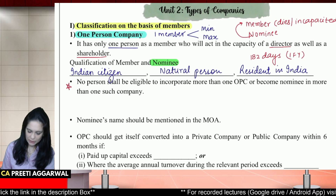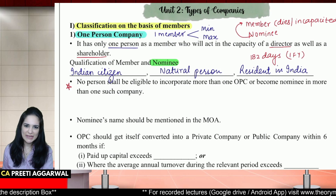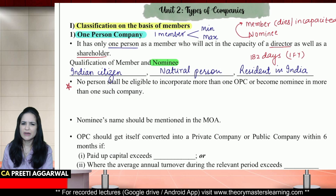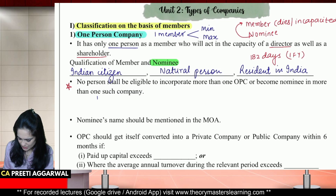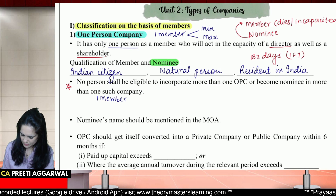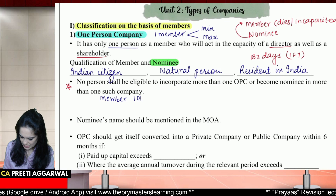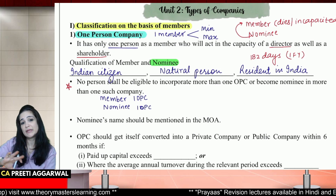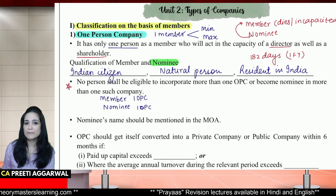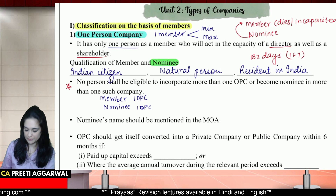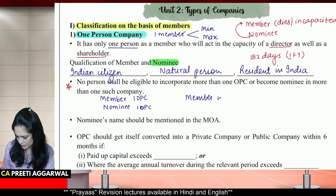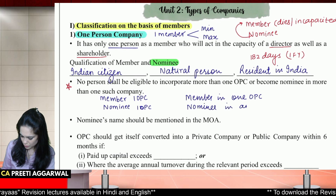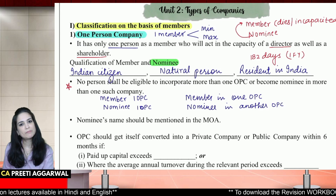No person shall be eligible to incorporate more than one OPC or become a nominee in more than one OPC. A person can be a member in just one OPC and a nominee in just one OPC. But can he be a member in one and a nominee in another? That is okay. So he cannot be a member in two OPCs or a nominee in two OPCs at the same time, but he can be a member in one OPC and a nominee in another OPC.